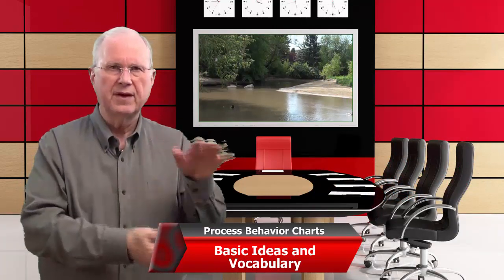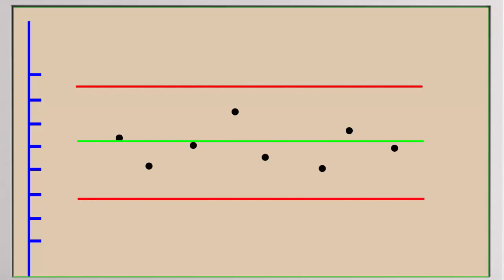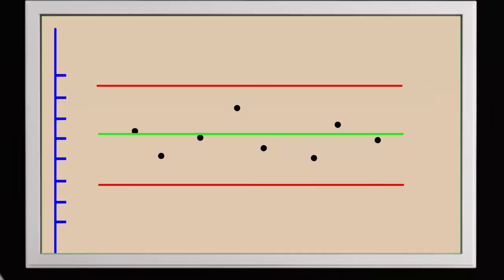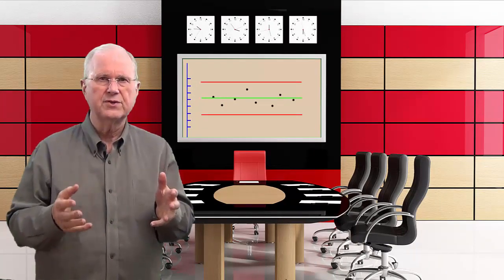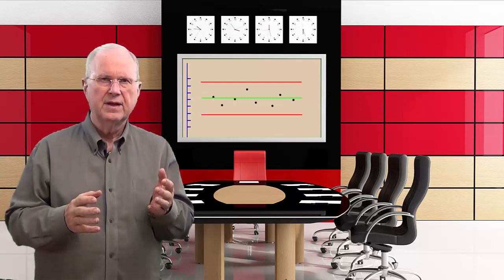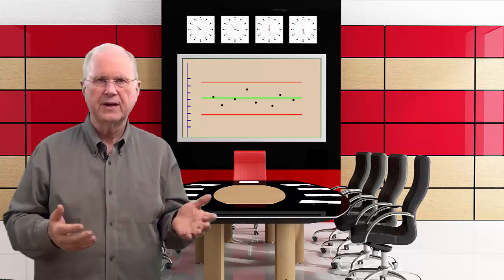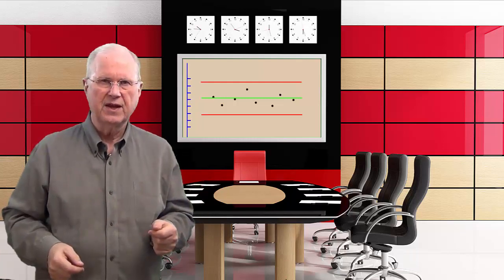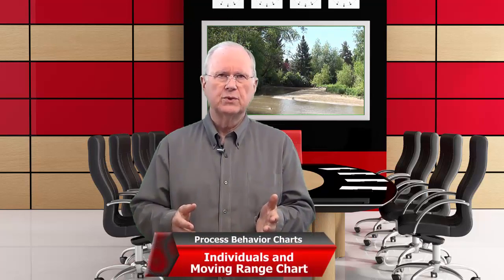The way that the charts are made, we have to have a vertical scale. Then we put in our data in order, horizontally spread out. We draw in a center line and we draw in limits. It's important to realize that the center line and the limits come from the data — they do not represent a desire, or an expectation, or a target, or a specification. It's time to take a look at the first of the two charts that we're going to study, and that's the Individuals and Moving Range Chart.